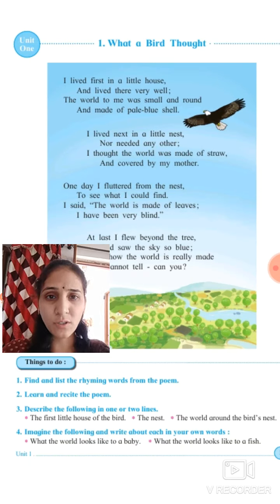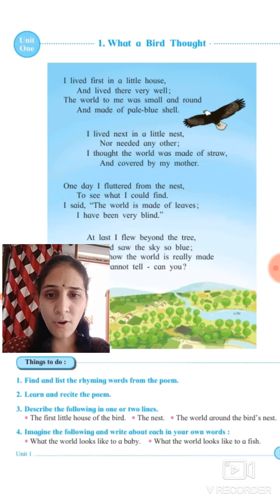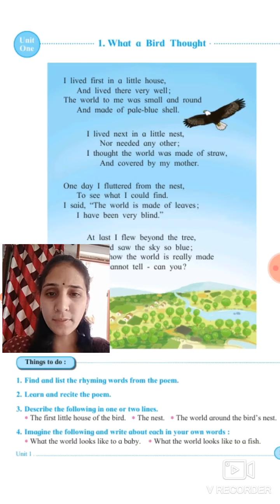It's a cover inside the egg — egg ke andar ka jo cover hai, white color ka, it's called pale blue shell. And you know that all birds are born inside eggs — egg mein sabhi birds born hote hain. For example, eggs of a hen — hen ke bhi eggs aise hi hote hain.